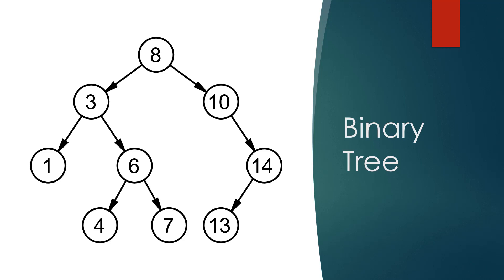Let's first understand the definition of a tree. A tree is a set of nodes, and each node is connected by edges. In a binary tree, the topmost node is called the root node, and every node can have a maximum of two child nodes. As you can see, node 8 is the root node and it has two child nodes: 3 and 10. Node 14 has just one child, which is 13.